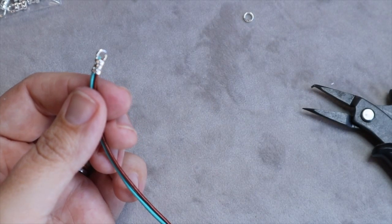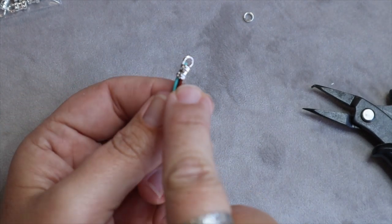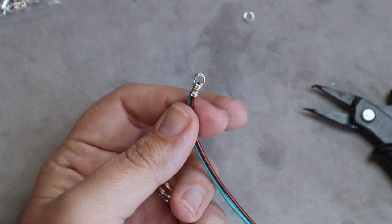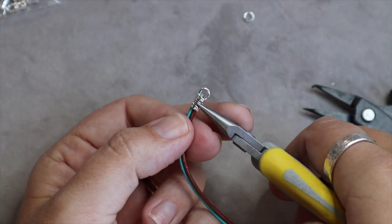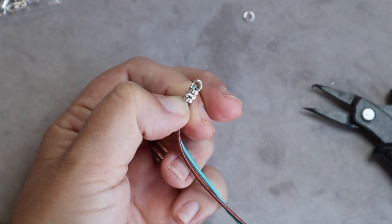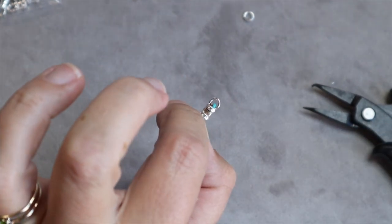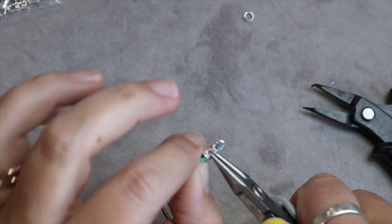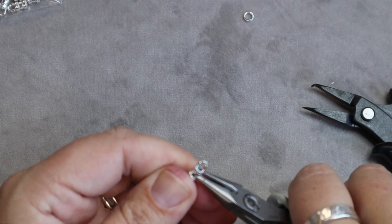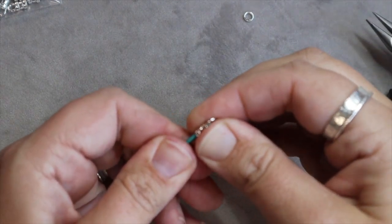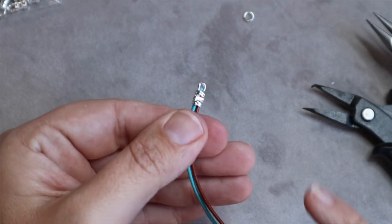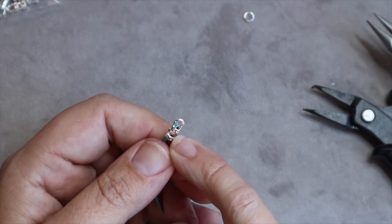You can use crimp pliers to crimp this. These specific crimps are made just to grab a hold of that center part and actually flatten out the center part so it still looks really nice but you have your piece completely crimped in place and you don't have to worry about that pulling out of your leather.